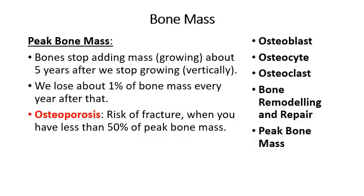Bone mass refers to how much bone you have. Peak bone mass is related to the fact that bones will stop adding mass about five years after we stop growing vertically. I reached peak bone mass at about age 21 and have been declining since, losing bone matter at about 1-2% per year. Osteoporosis is a condition where you have a risk of bone fracture — technically defined as having less than 50% of your peak bone mass. Almost everybody develops osteoporosis if they live long enough, so pretty much everybody in their 80s has it.